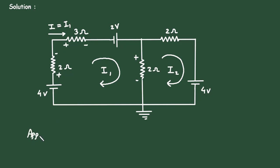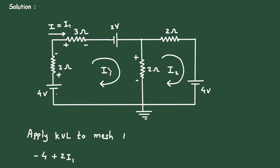Applying KVL to mesh number 1, starting from this point: minus 4, plus 2I1, plus 3I1, minus 2, plus 2 times the quantity (I1 minus I2), and the loop is complete, so equal to 0.